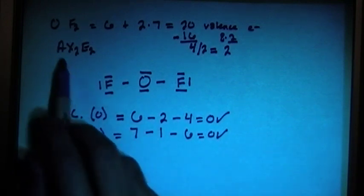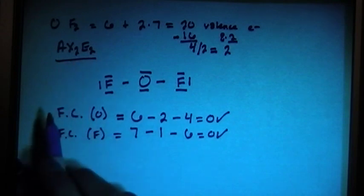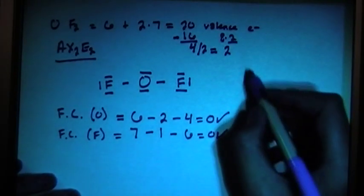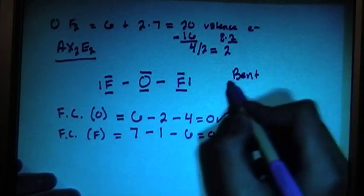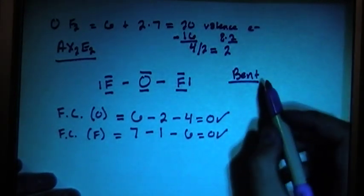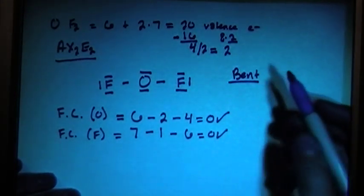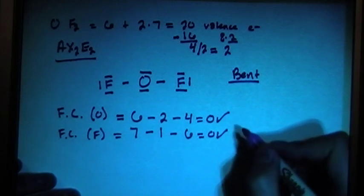Now we can look at the shape. Based on the AX2E2, we know that that means it is going to be a bent molecule. And based on the nature of a bent molecule, it's going to end up being polar.